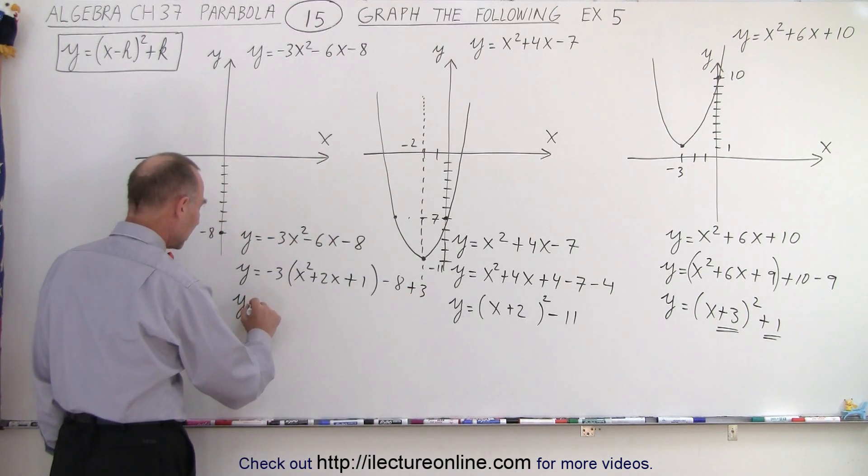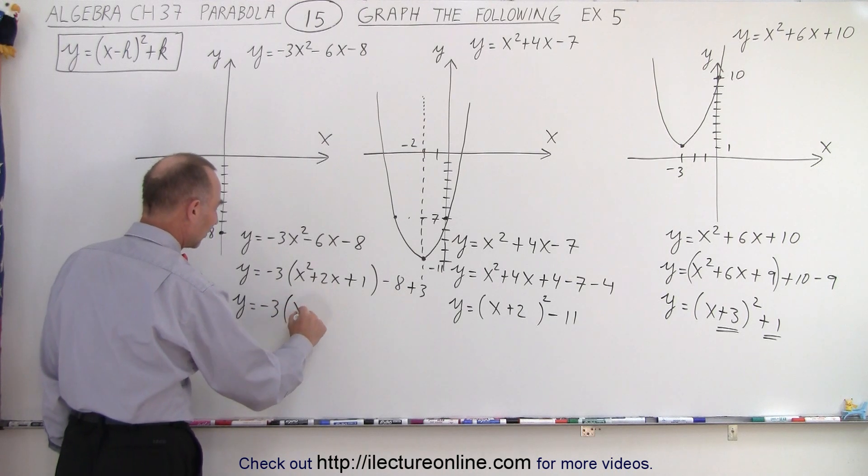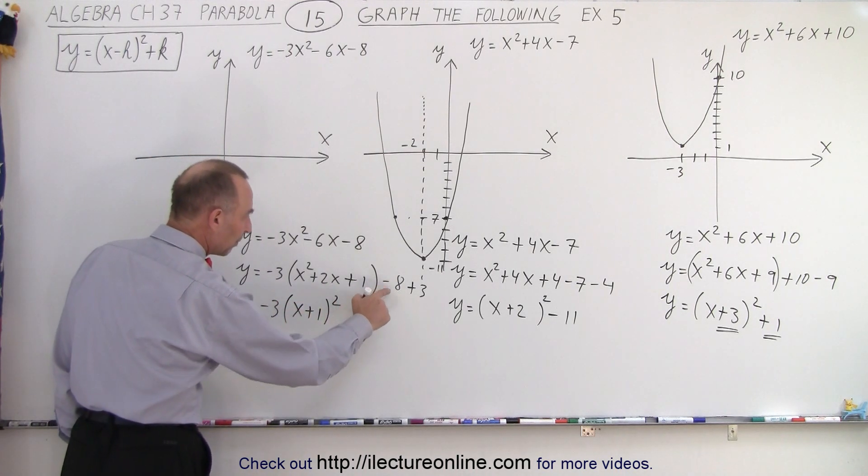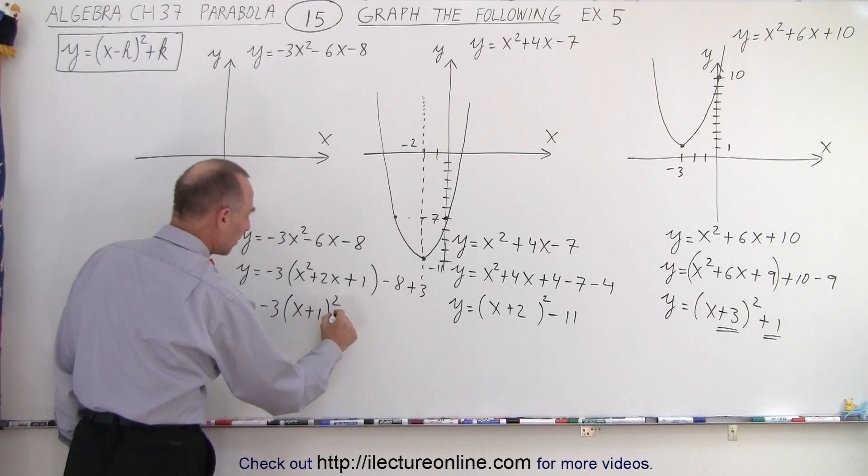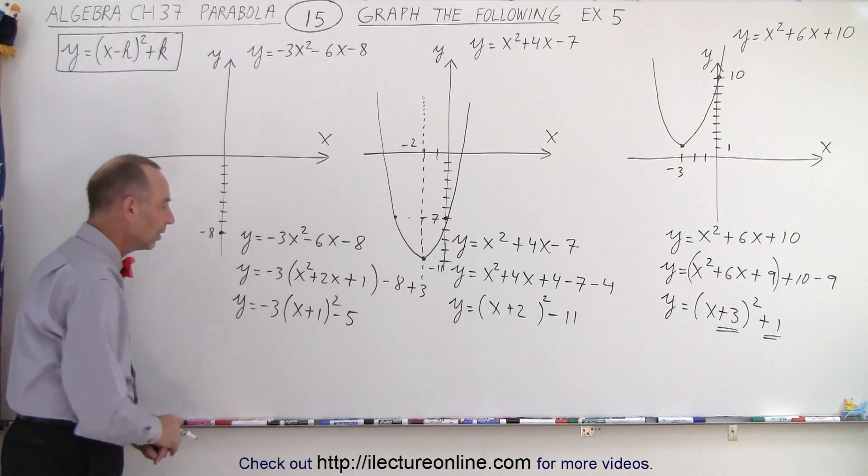So now we have y equals negative 3 times x plus 1 squared, and that would be minus 8 plus 3 is minus 5.